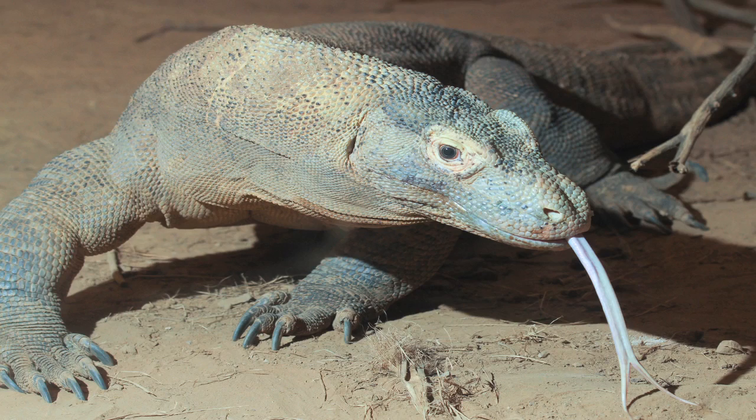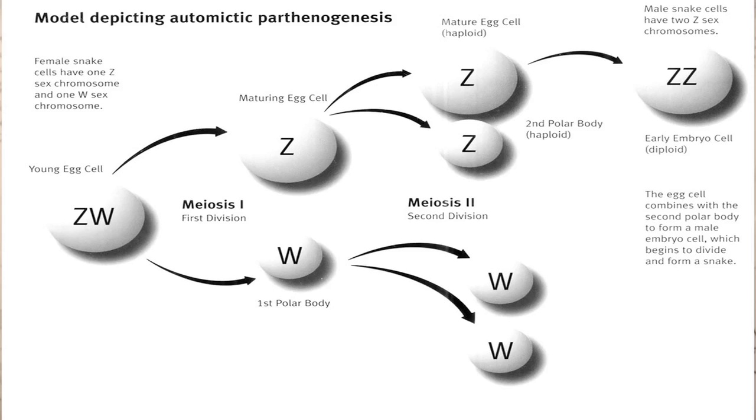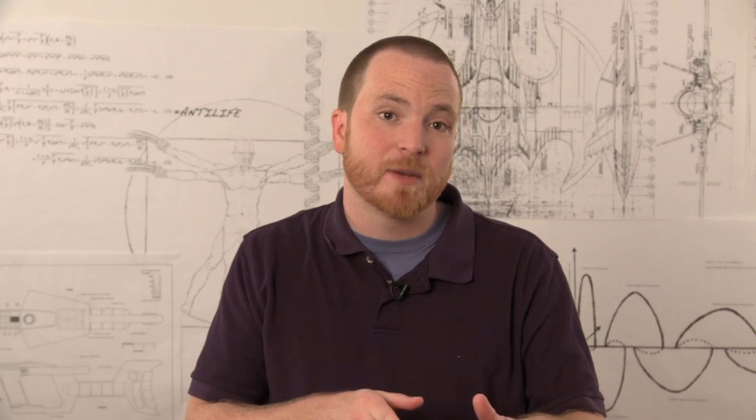Cloning can even happen in vertebrates, such as amphibians and reptiles, through parthenogenesis. This is another form of reproduction without fertilization. But most vertebrates don't have this ability, so scientists have developed a technique known as SCNT, somatic cell nuclear transfer.